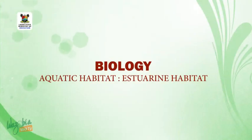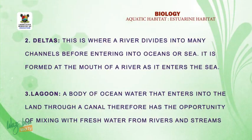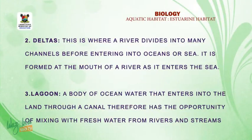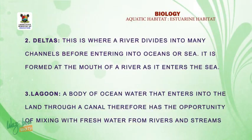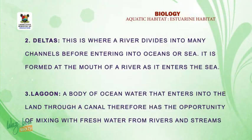Welcome back. Now let's look at number two: delta. A delta is where a river divides into many channels before entering the ocean or sea. It is formed at the mouth of a river as it enters the sea. Number three: lagoon. A lagoon is a body of ocean water that enters into the land through a canal, giving water the opportunity of mixing with fresh water.